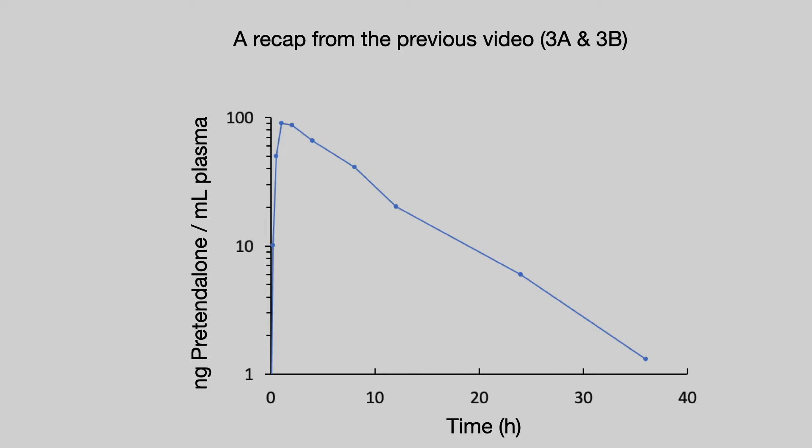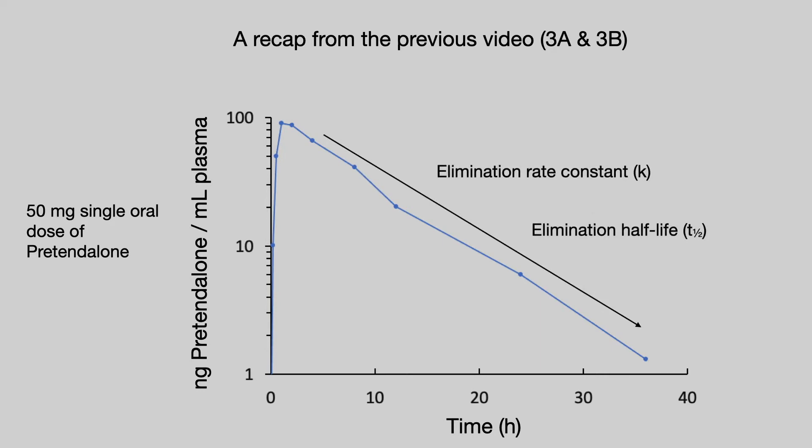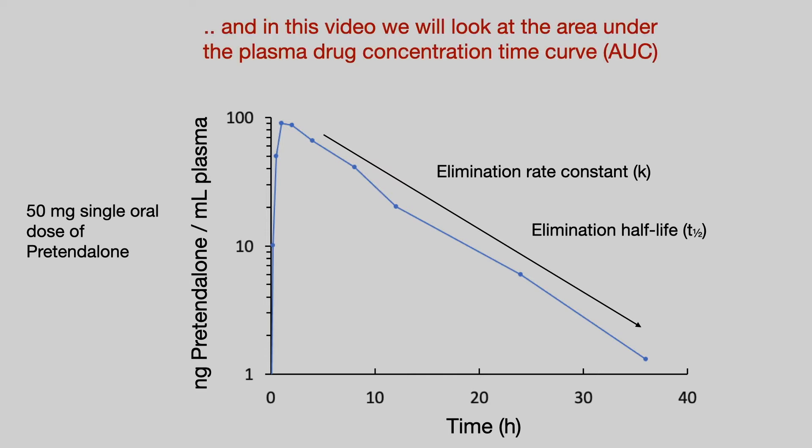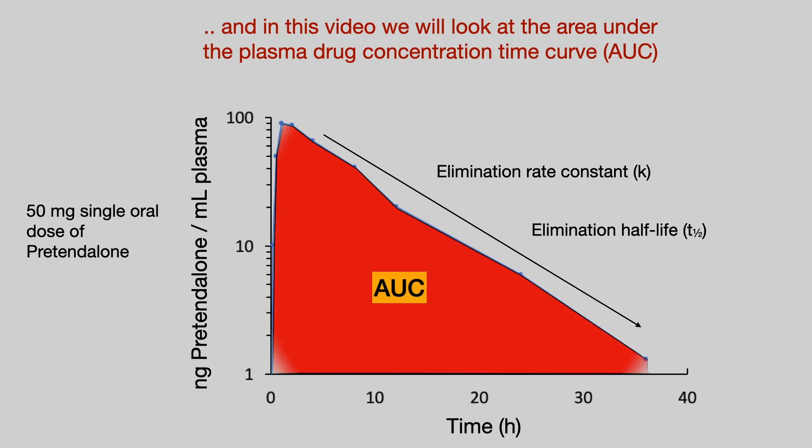Here we have the oral drug concentration time plot for Pretendalone — a 50mg single oral dose. We calculated the elimination rate constant and the half-life. Now in this video, we're going to look at a different pharmacokinetic parameter known as the area under the curve, represented by the red area shown here.